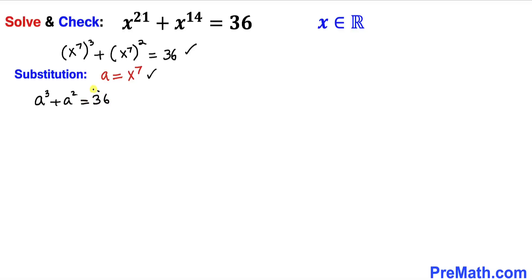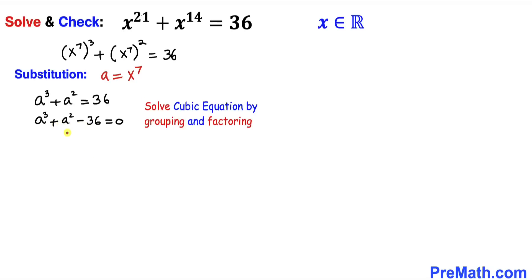Let's move 36 to the left hand side, so we end up with a³ + a² - 36 = 0. Now we can see this is a cubic equation, and we are going to solve it by using grouping and factoring.